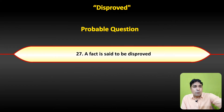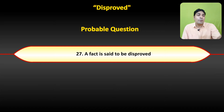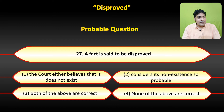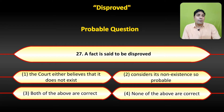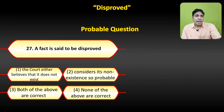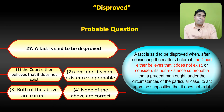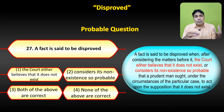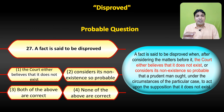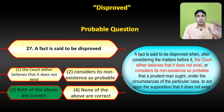The probable question on disproved: 'A fact is said to be disproved' — options: first, the court either believes that it does not exist; second, considers its non-existence so probable; third, both of the above are correct; fourth, none of the above are correct. Looking at the definition — 'the court either believes that it does not exist' — option one is correct. And 'considers its non-existence so probable' — option two is also correct. So option three, both of the above are correct, is the correct answer.